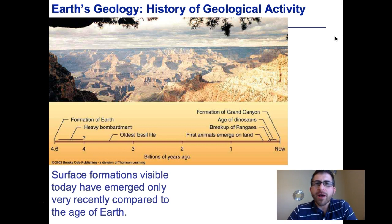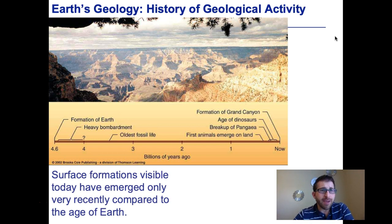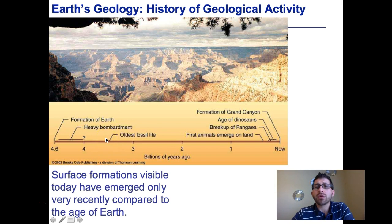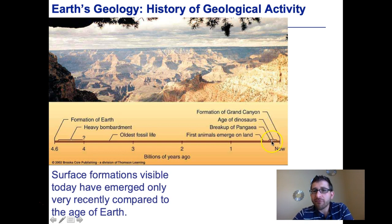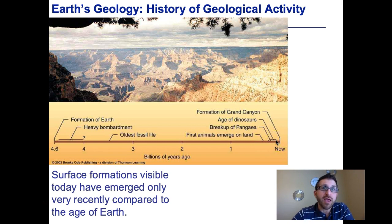Now before we get into that, let's talk a little bit about the history of Earth's geologic activity. The formation of Earth was somewhere around the 4.6 billion years ago time period, and for a vast distance of time we had what we would consider to be the heavy bombardment, when Earth was undergoing massive impacts by objects during the early stages of the solar system. Now oldest fossil life is right around here at the 3.5 billion year mark, and this fossil life would have been single-celled and mostly found in the oceans. It was not up until much more recently where we start to see first animals emerging on land, the breaking up of the supercontinent of Pangea. Notice how close the age of the dinosaurs is on this scale to now — we are much more closely related to the age of the dinosaurs than we are to anything else in this time scale. The dinosaurs are recent.